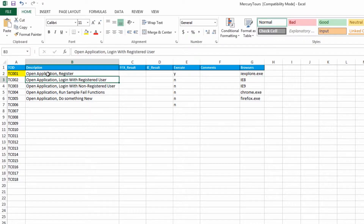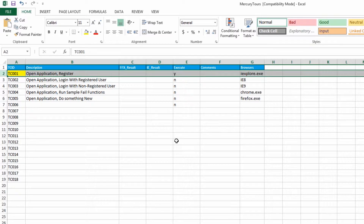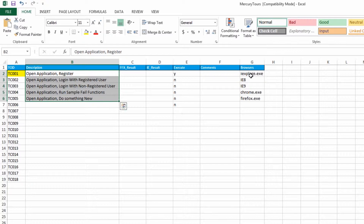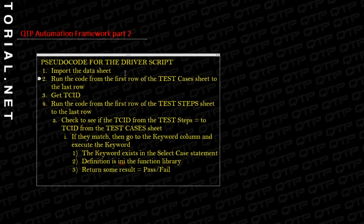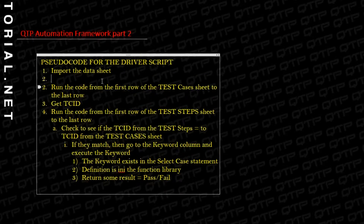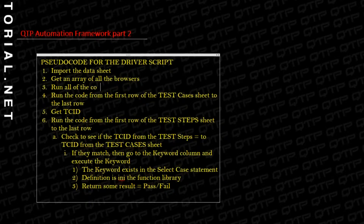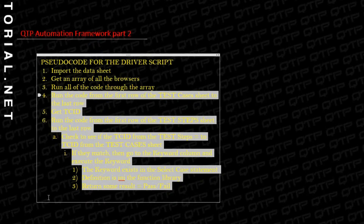So if I want to add this layer, all it is is just an extra loop that allows me to run every single one of these test cases. Let me show you how that looks in plain English. Once we import the data sheet, we run the code from the first row of the test cases sheet to the last row. Before that, we need to get an array of all the browsers and run all of the code through that array.